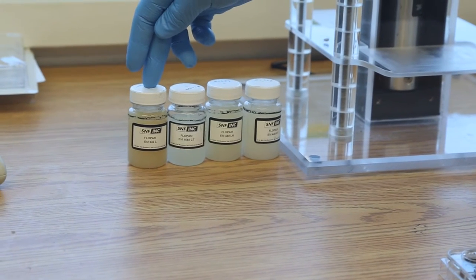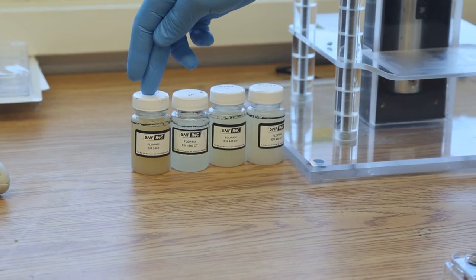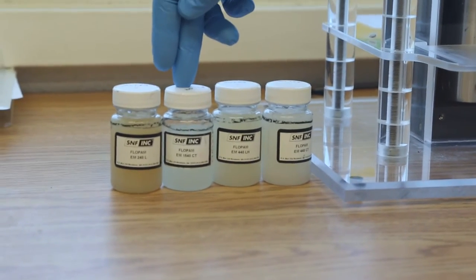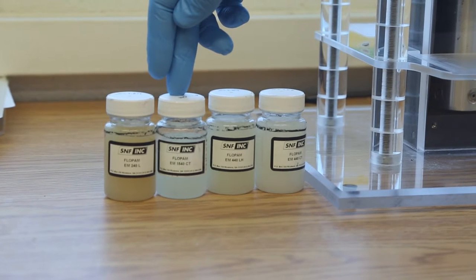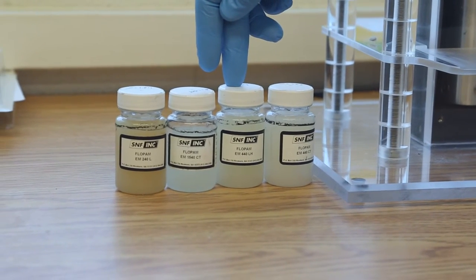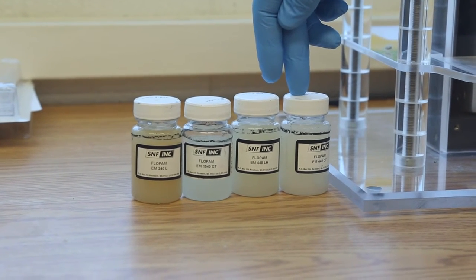We also varied the molecular weight, both low and high, as well as the charge density of the polymers, the low and the high as well. For low molecular weight and low charge density, we also have a high molecular weight with a low charge density, we have a low molecular weight with a high charge density, and we have a high molecular weight and a high charge density. Okay, so all combinations there.